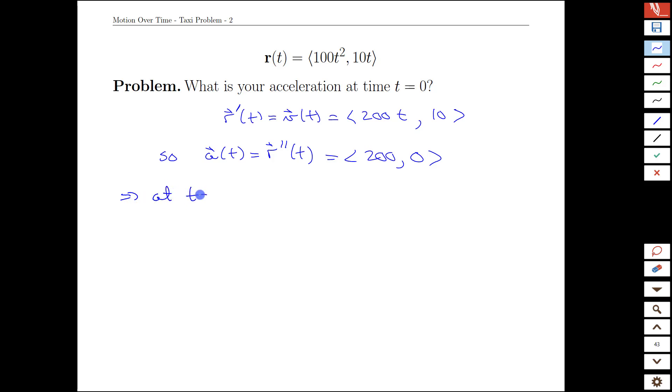At time t equals 0, we actually get that same value because there's no t's left in our formula. So in fact, it's not about time 0. This acceleration is constant for all time.